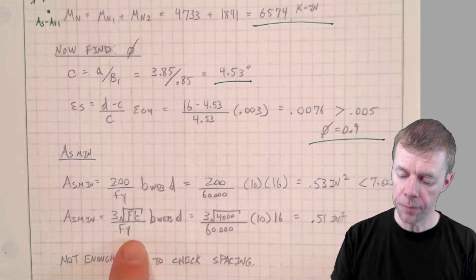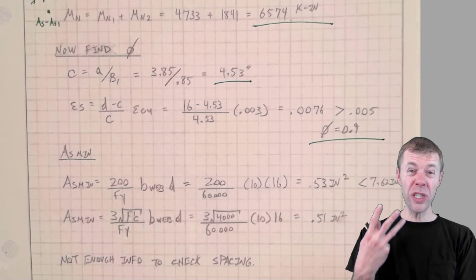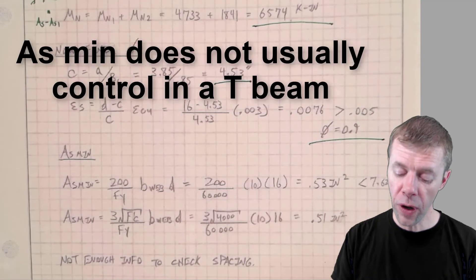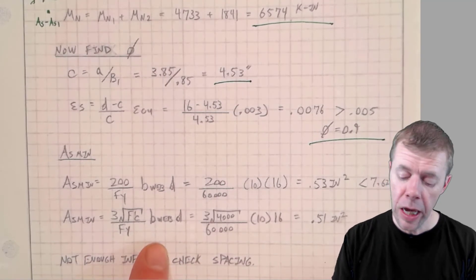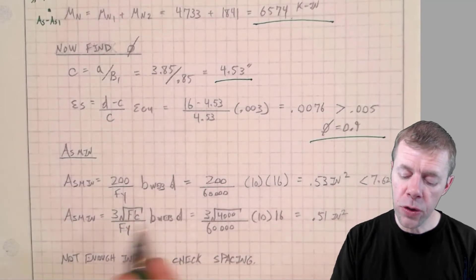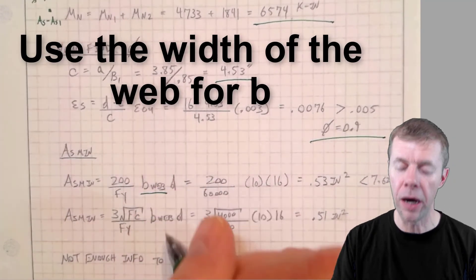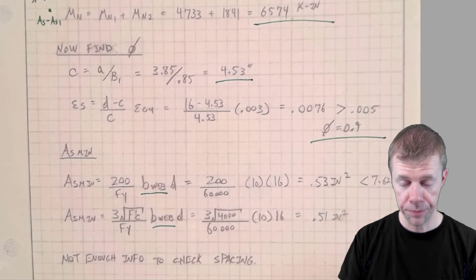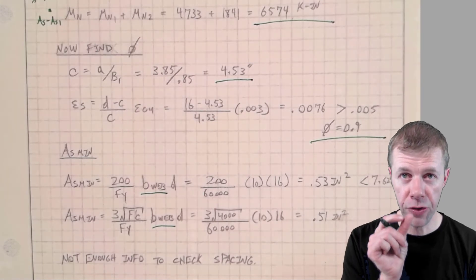Now I calculate my area of steel. It would be really rare for your area of steel to control for a T-beam. And notice when you calculate your area of steel, you use the B of the web, not the entire B, the B of just the web.